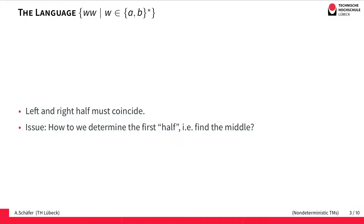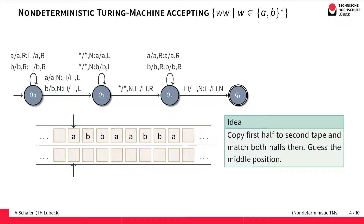Now going back to languages, consider this language — the language of words of the form WW, where W contains As and Bs. The important part is that the left and right half must coincide. The problem when accepting this language is that, given a word, we must somehow determine the first half, meaning we have to find the middle.